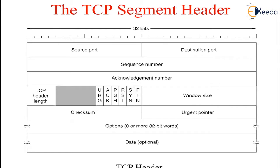The URG flag is set to 1 if the urgent pointer is in use. The urgent pointer is used to indicate a byte offset from the current sequence number at which the urgent data can be found.